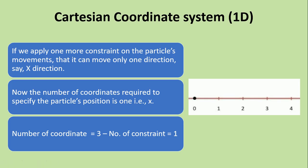If we move to an even lower-dimensional system — a one-dimensional system — we apply a total of two constraints on the particle's movement, so it can move only in one direction, say the X direction. The number of coordinates required to specify the particle's motion is then only one. In general, the number of coordinates required equals three minus the number of constraints; here two constraints gives us one coordinate.